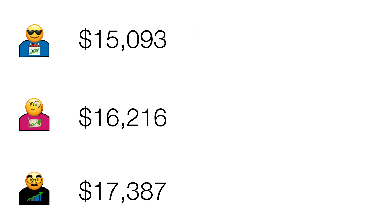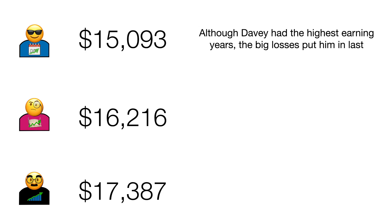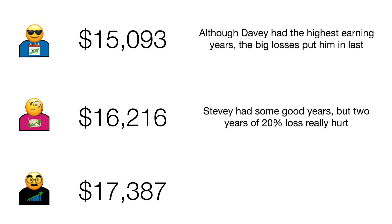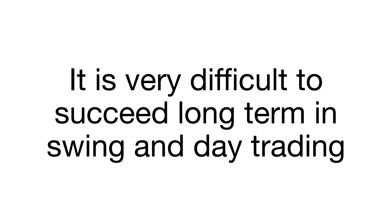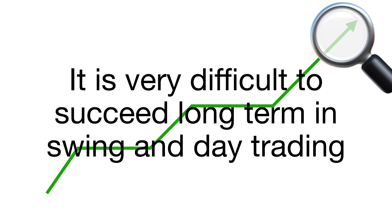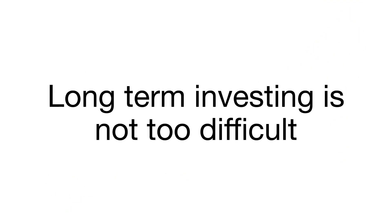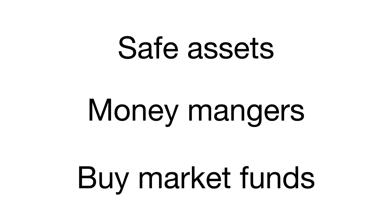Comparing the three: although Davey had the highest earning years, the big losses put him in last place. Stevie had some good years, but two 20%-loss years really hurt, leaving him in second. Louie had no huge years but avoided massive losing years — slow and steady, he ends up winning. It's very difficult to succeed in day trading and swing trading; you really have to study the markets and know what you're doing. Long-term investing is not too difficult — just buy safe assets, or have money managers do it for you, or buy general market funds. You can end up like Louie: making small easy gains, avoiding big losses, and seeing your account keep growing.